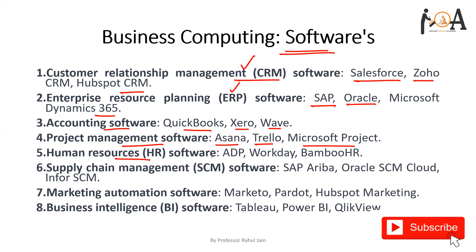For human resources HR softwares, there is ADP, Workday, or Bamboo HR. For supply chain management SCM software, there is SAP, Infor, Oracle SCM Cloud — very famous software — and Infor SCM. For marketing automation softwares, there is Marketo, Pardot, and HubSpot Marketing. For business intelligence softwares like Tableau, Power BI, and QlikView — it helps to monitor your business and make predictions about future trends. These are some of the important softwares used under business computing.